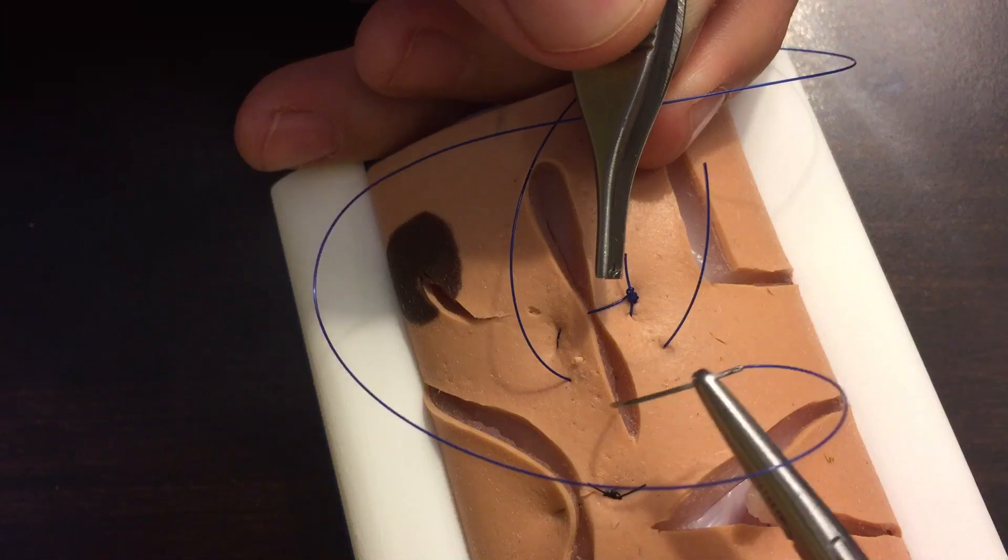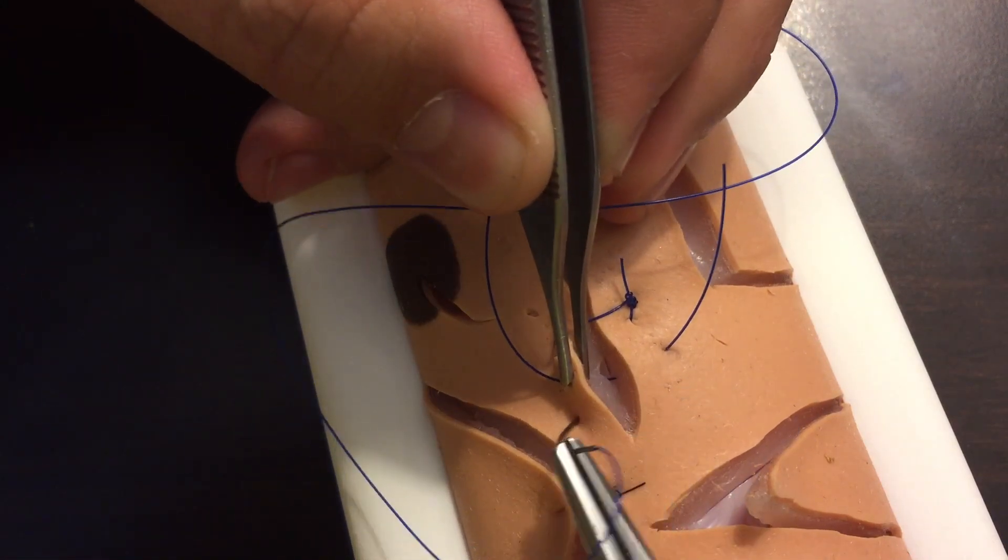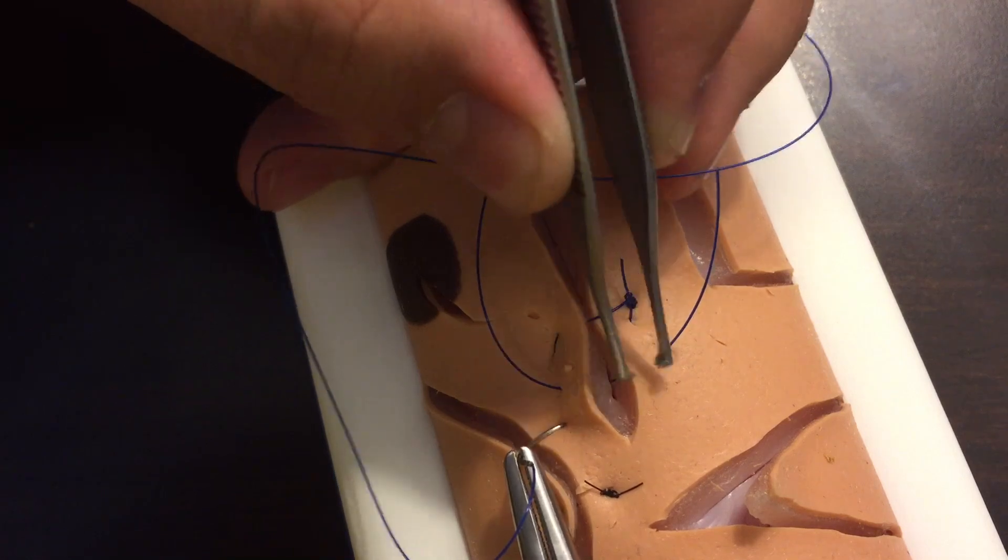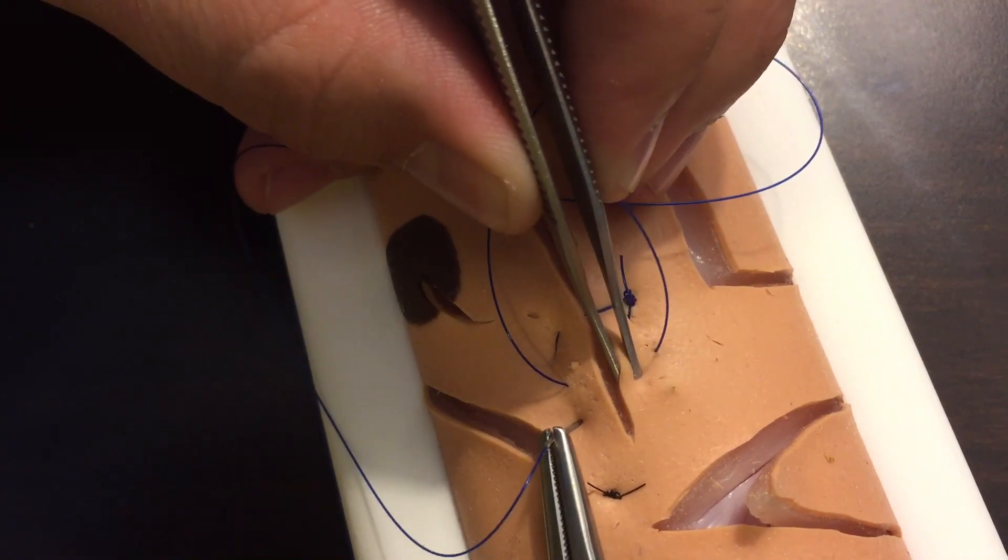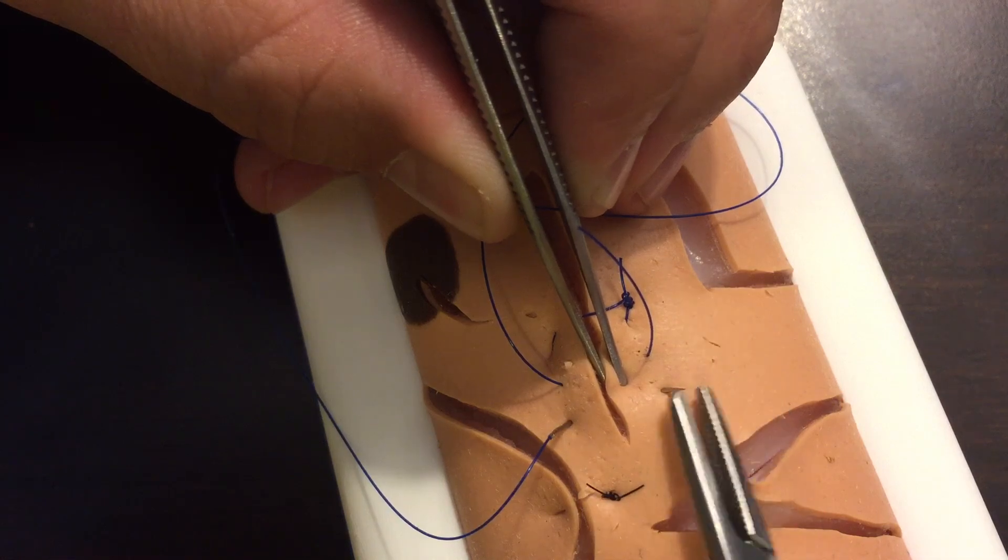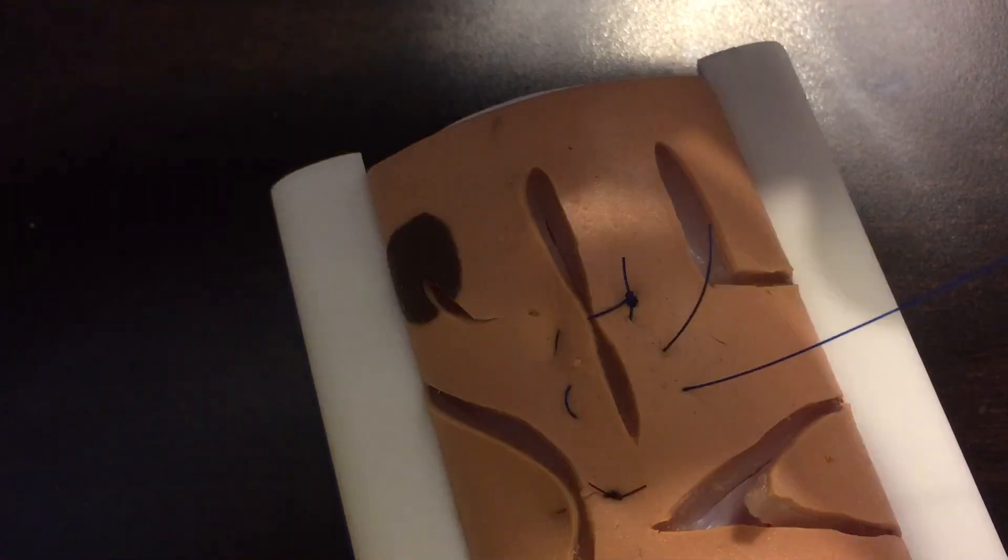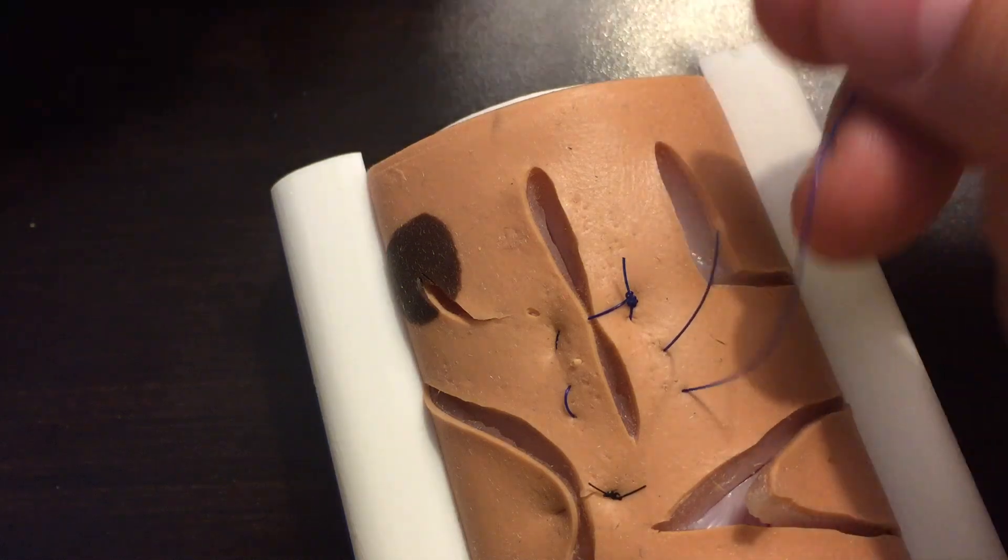Again, staying the same distance from the skin edge, we're going to enter the skin, coming across at that same depth that we did the first pass, and then exiting the skin at 90 degrees, the same distance as we had first entered the first time.